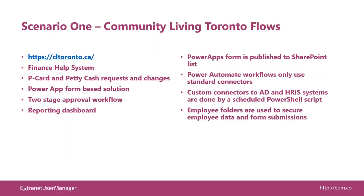Our first real example is Community Living Toronto — a not-for-profit organization providing community outreach services to the underprivileged in the city of Toronto. Their staff need various different things, so we've piloted a finance help system where, for expense credit cards (P-cards) required by staff, they previously had a paper form that literally went across different people's desks and ended up at the finance department for final approval. Likewise for petty cash. We wanted to automate that — build an electronic form and a workflow process around it using both Power Apps and Power Automate.